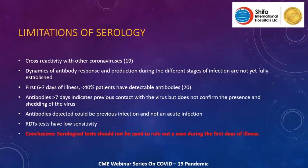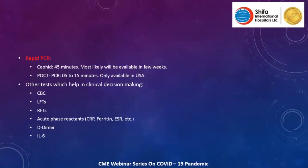Looking at the future: rapid PCR is coming to Pakistan, launched in the UAE about two to three weeks ago, taking only 45 minutes with results available in one to two hours. There is also a point-of-care PCR that can be performed in a clinician's office, taking five minutes for a positive result and 15 minutes for a negative, but this is currently only available in the USA. Supportive tests such as CBC, LFTs, and acute phase reactants can also be utilized while awaiting PCR results.